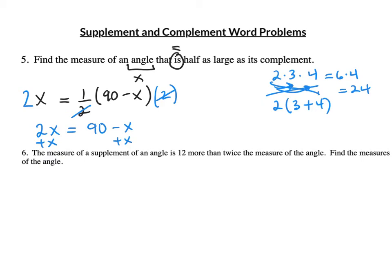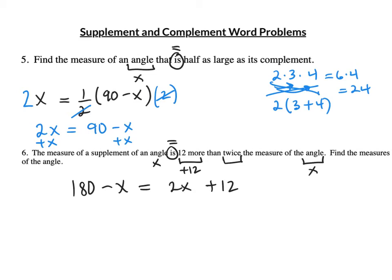Number 6: Find the measure of a supplement of an angle that is 12 more than twice the measure of the angle. Remember "is" means equal. Find the measure of the supplement — 180 minus x. That equals: 12 more means adding 12, plus 12. 12 more than twice the angle — twice the angle is 2x. So my equation is 180 minus x equals 2x plus 12. Now find the measure of the angle — x will be your answer.